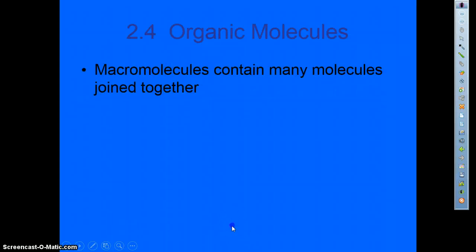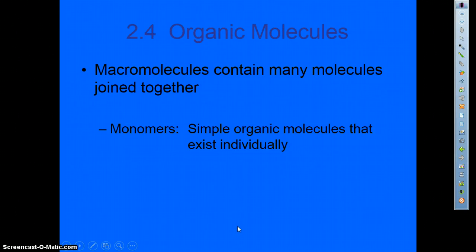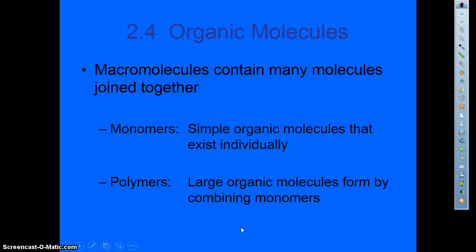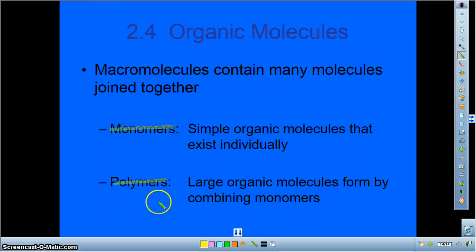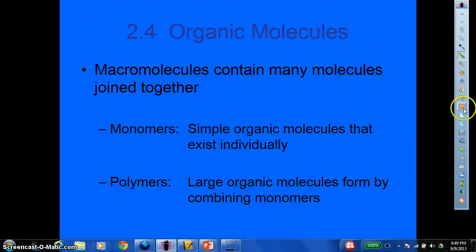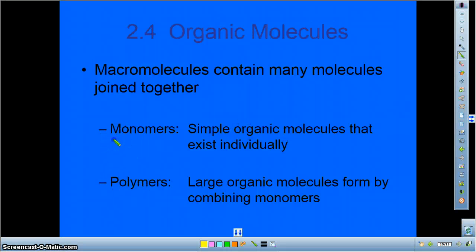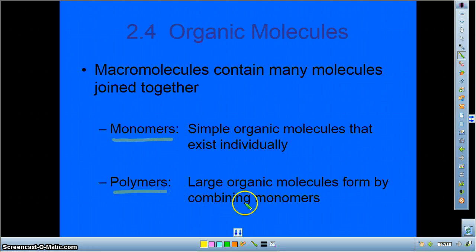Macromolecules contain many molecules that get joined together, and there are two different words that you need to be familiar with: monomers and polymers. Just like in algebra, mono means one, poly means many, so you're used to monomials and polynomials. In biology, monomers go together to make up polymers, which are large organic molecules, where monomers are the simple organic molecules.